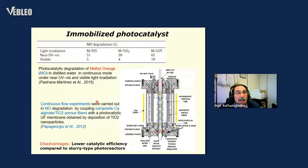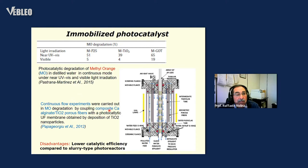Other tests concerning dyes were done by Pastran Martinez and co-workers using methyl orange. Papa Giorgio and others in 2020 used not a slurry but a photocatalytic membrane — titanium dioxide deposited on a composite calcium alginate — and concluded that the immobilized photocatalyst gives lower catalytic efficiency compared to the large-tube photoreactor. These results confirm findings obtained earlier on this kind of aspect.